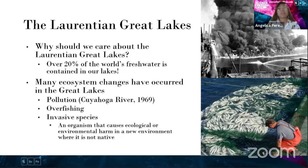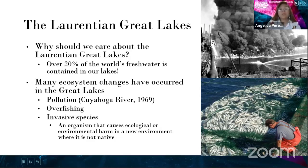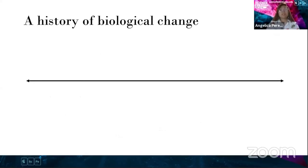So overall, why should we care about the Great Lakes? Well, over 20% of the world's fresh water is contained in our lakes, which is pretty amazing. And we have also seen many ecosystem changes that have occurred in our Great Lakes, such as pollution — a prime example being the Cuyahoga River Fire in 1969 — along with overfishing, which pressured our lake trout populations. Furthermore, we have seen the introduction of invasive species, which is an organism that causes ecological or environmental harm in a new environment in which it is not native.